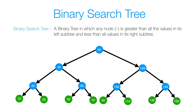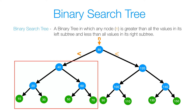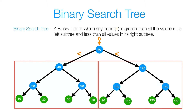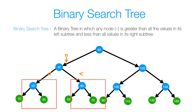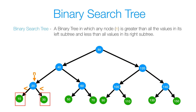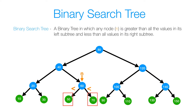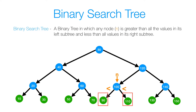So just as a recap, a binary search tree is a binary tree in which any node n is greater than all the values in its left subtree and less than all the values in its right subtree. And that applies to every single node in the binary search tree, where all nodes to the left of that node are smaller, and all nodes to the right are larger.